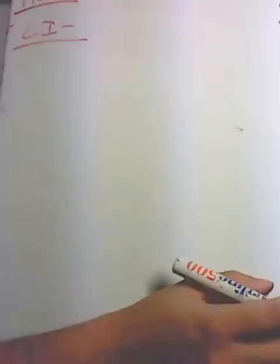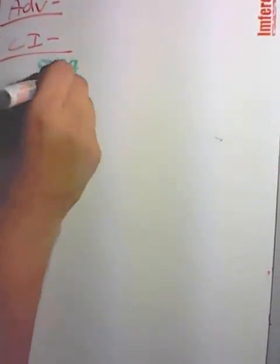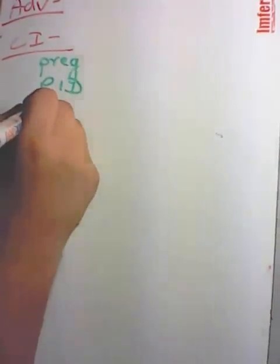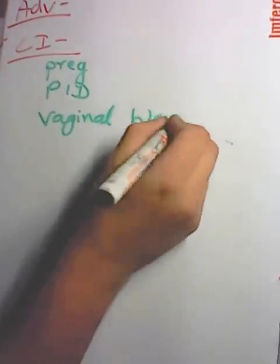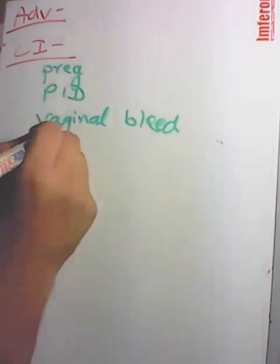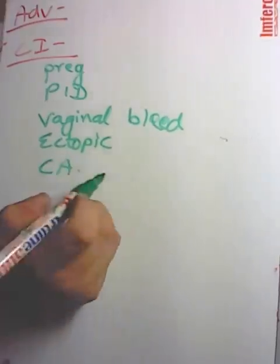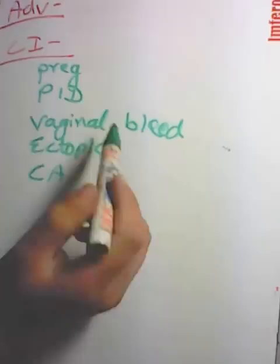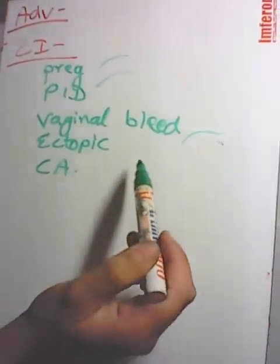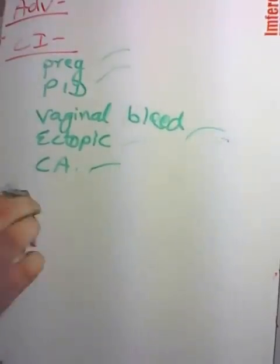Absolute contraindications for IUD insertion: pregnancy or suspected pregnancy, pelvic inflammatory disease (PID), vaginal bleeding of undiagnosed etiology, ectopic pregnancy, and cervical/uterine cancer.